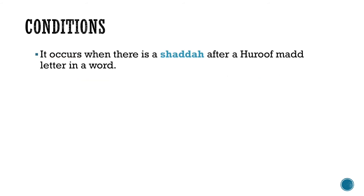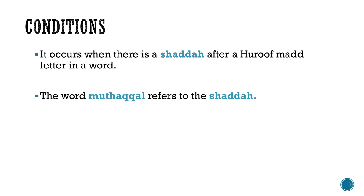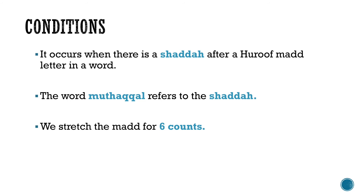What are the conditions? Number one: it occurs when there is a شَدَّة after a حَرْف مَدْ (letter of elongation) in a word. Number two: the word مُثَقَّل refers to the شَدَّة. And number three: we stretch the مَدْ for six counts.